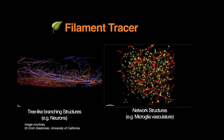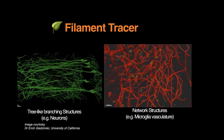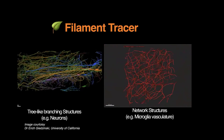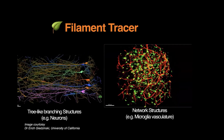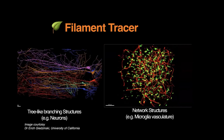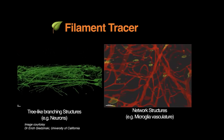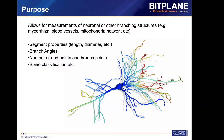This relates to the algorithms in Filament Tracer. On the left, we use the algorithm called AutoPath to trace tree-like branching structures. But for network structures that contain loops — where you can link from a starting point back to itself — AutoPath will not work, so we need to use the threshold-based algorithm.